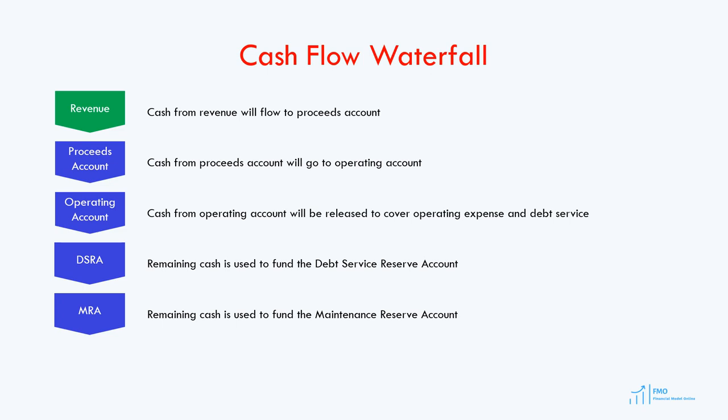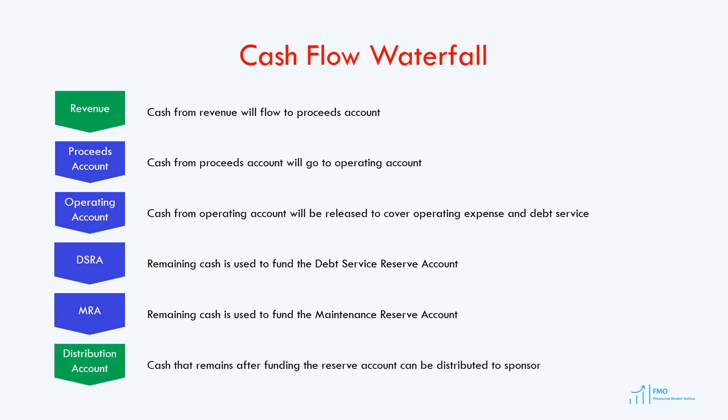Once the MRA has been funded, the cash flow is allowed to be distributed to the shareholders. Typically, dividends are allowed to be paid only when debt service is paid, the required accounts are fully funded, and the project's financial performance passes certain tests, such as the minimum required debt service cover ratio being above 1.1.